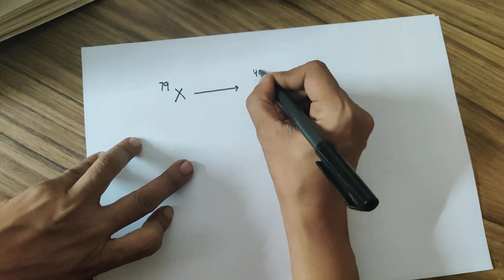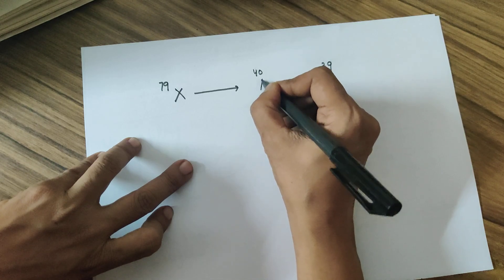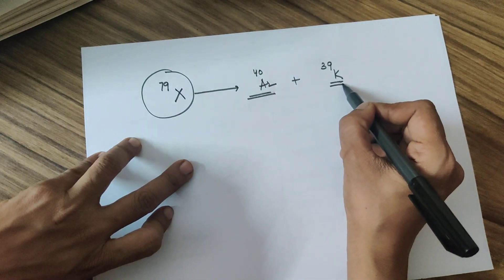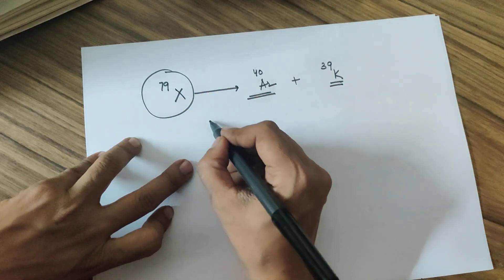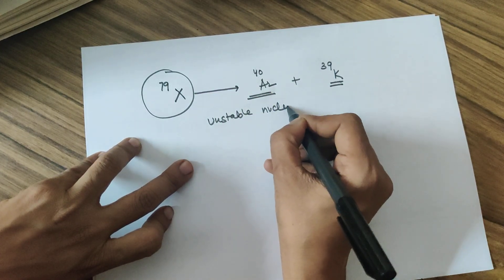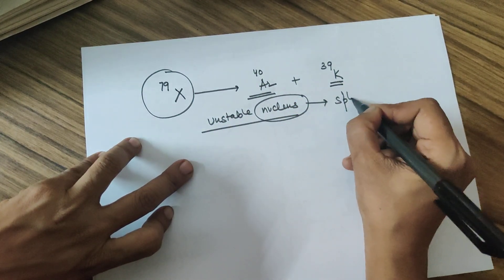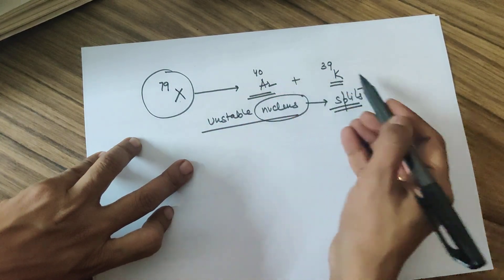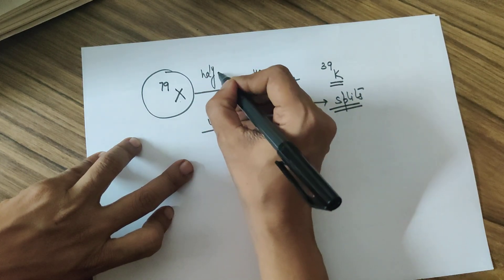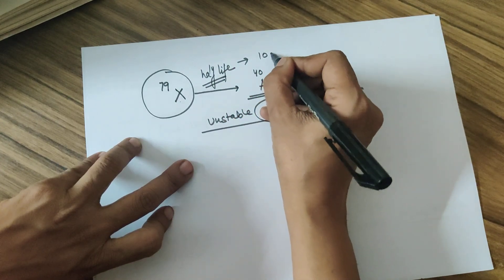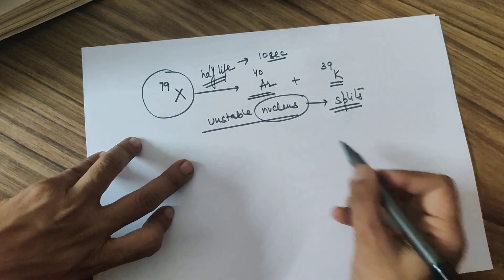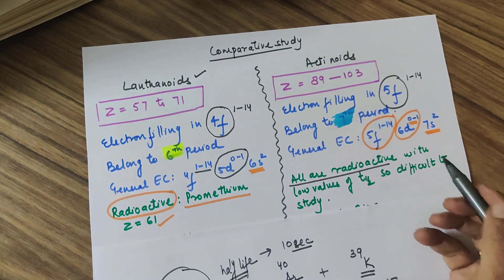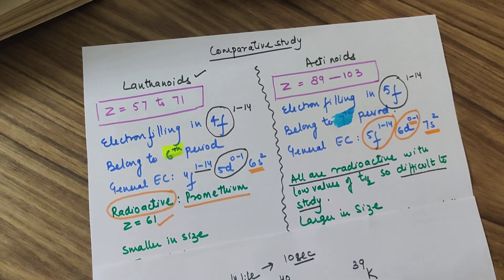When an element is radioactive, its nucleus spontaneously splits, changing the number of protons, making it impossible to study consistently. For example, element X (mass 79) might split into two fragments corresponding to argon and potassium — it decomposes on its own. If its half-life is just 10 seconds, 50% of it breaks down in that time. Notably, all actinoids are radioactive, making them very difficult to study.